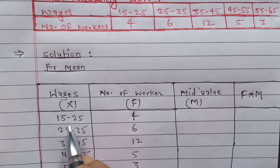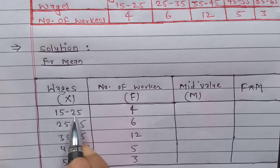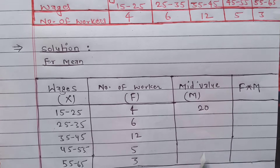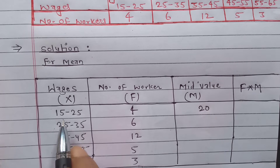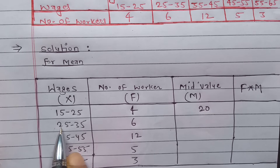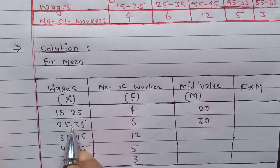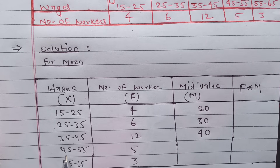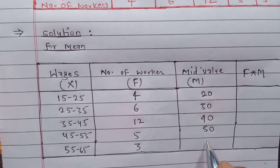Now, how do we calculate the mid value? The formula is: lower limit plus upper limit divided by 2. So 15 plus 25 divided by 2 equals 40 divided by 2, which is 20. The mid value between 15 and 25 is 20. Similarly, 25 plus 35 divided by 2 is 30. The mid value of 35 and 45 is 40, of 45 and 55 is 50, and of 55 to 65 is 60.